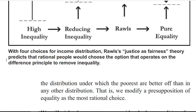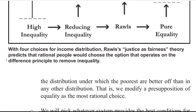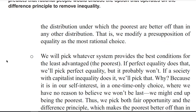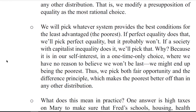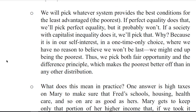With four sources for income distribution, Rawls' justice as fairness theory predicts that rational people would choose the option that operates on the difference principle to remove inequality — the distribution under which the poorest are better off than in any other distribution. That is, we modify a presumption of equality as the most rational choice. We will pick whatever system provides the best conditions for the least advantaged, the poorest. If perfect equality does that, we will pick perfect equality, but it probably won't. If a society with capitalist inequality does it, we will pick that. Why? Because it is in our self-interest. In a one-time-only choice where we have no reason to believe we won't be last, we might end up being the poorest. Thus, we pick both fair opportunity and the difference principle, which makes the poorest better off than in any other distribution.